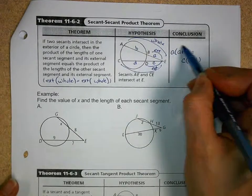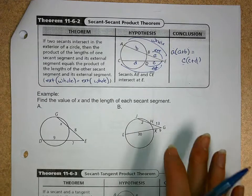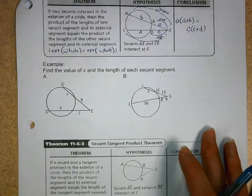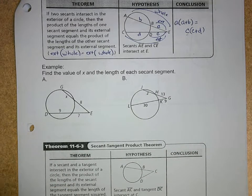Right? So that's the exterior times the whole, the exterior times the whole. It's a great easy way of keeping track of these. So let's do a couple of the problems applying this theorem.